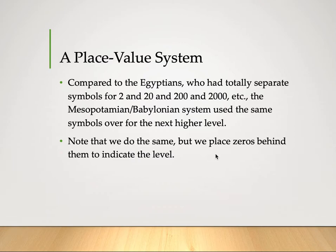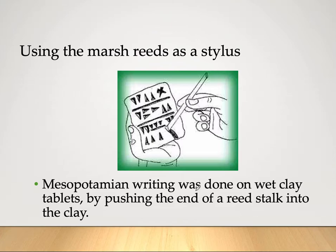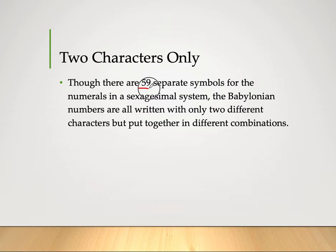Using marsh reeds as styluses, Mesopotamian writing was done on wet clay tablets by pushing the end of a reed stock into the clay and then letting it dry, producing cuneiform tablets. Though there are 59 separate symbols for numerals in the sexagesimal system, Babylonian numbers are all written with only two characters — two different characters put together in different combinations — unlike the Hindu-Arabic system which uses 10 characters from 0 to 9.